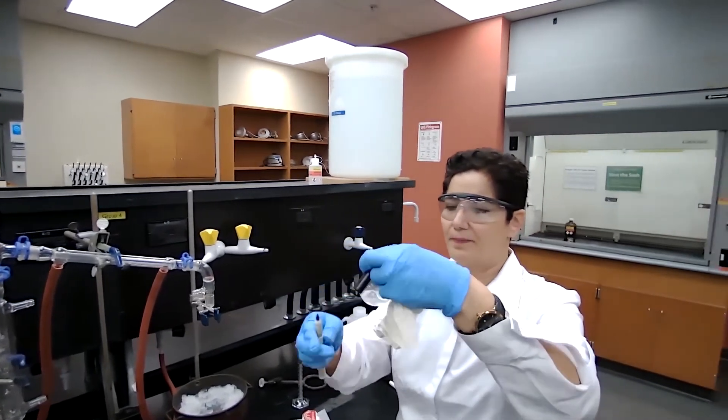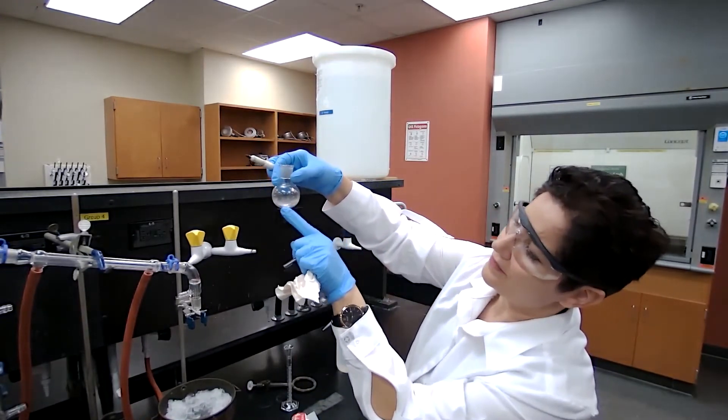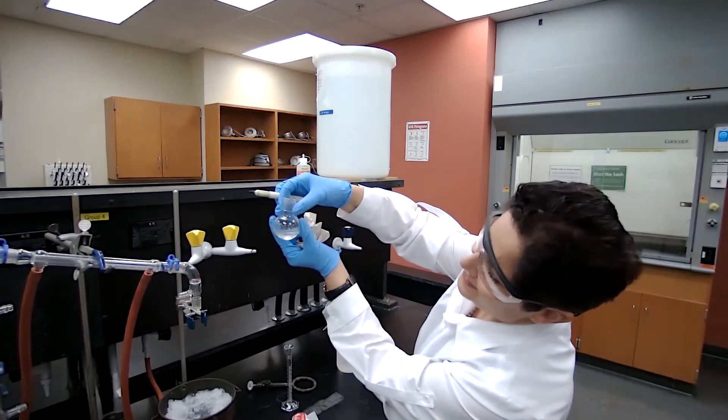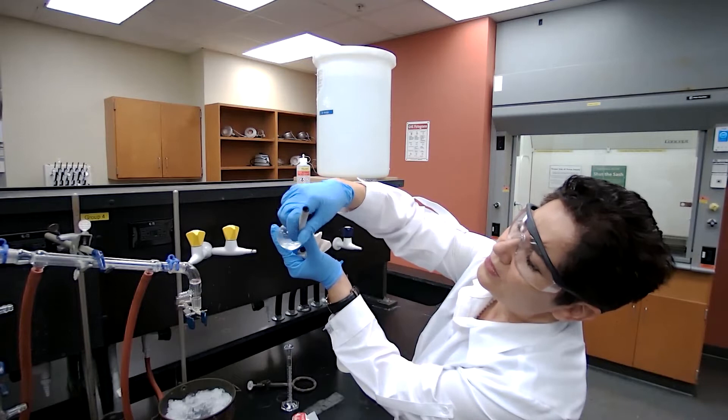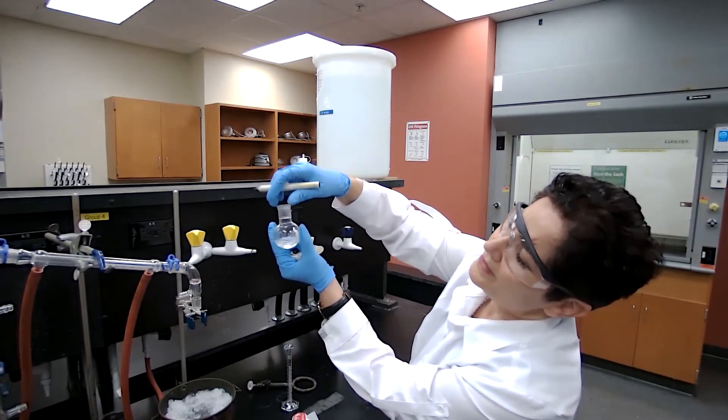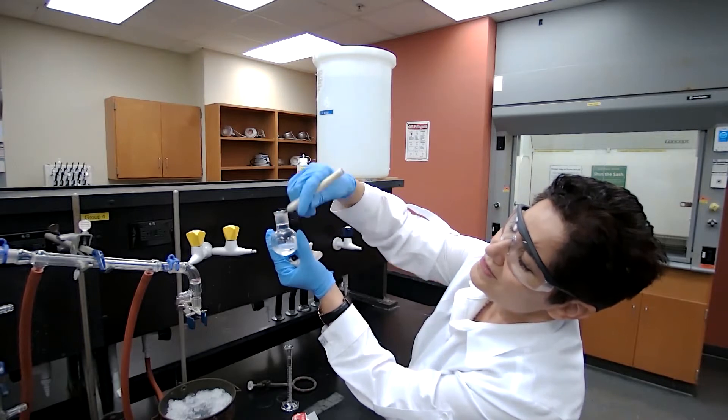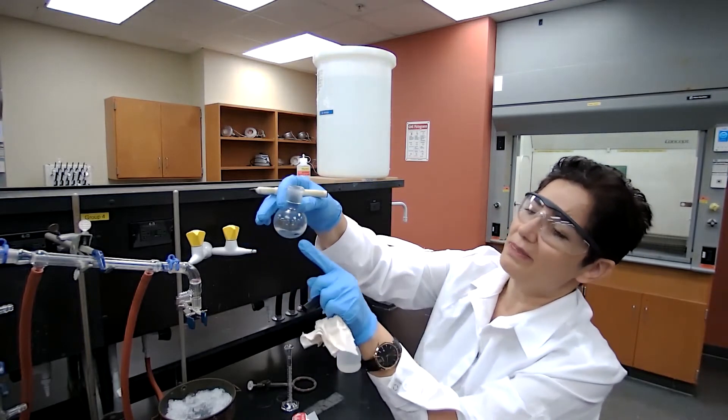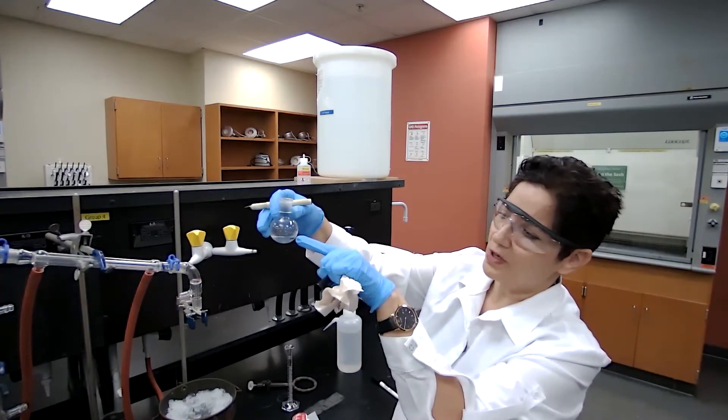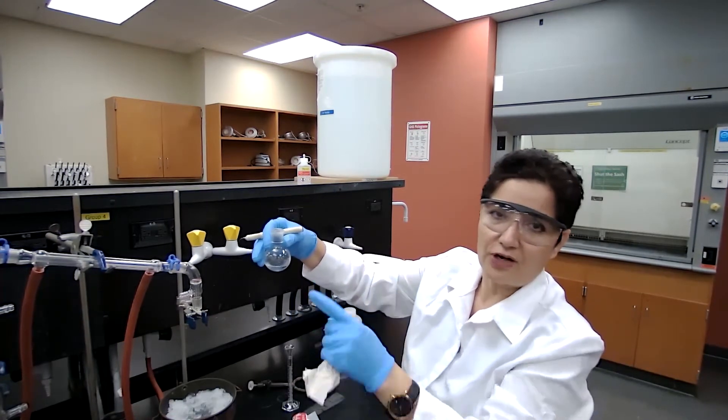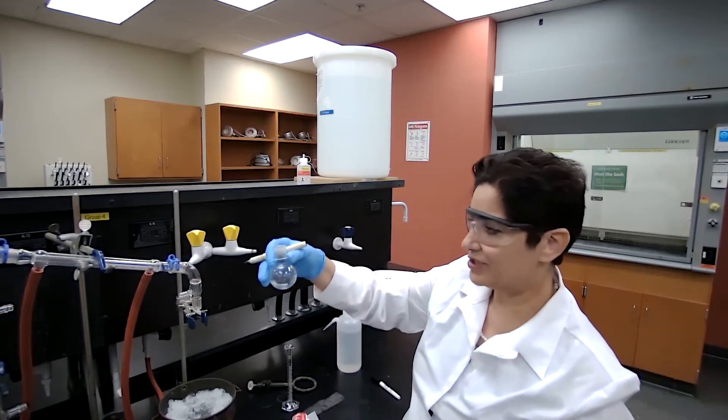Now see how high, what's the height of the liquid in the flask. We can mark the height of the liquid. When the level of the distillate reaches this mark, I know I have collected 10 milliliters and I can stop the distillation.